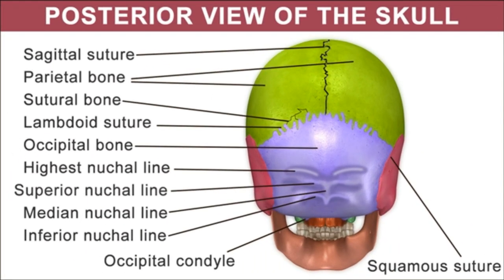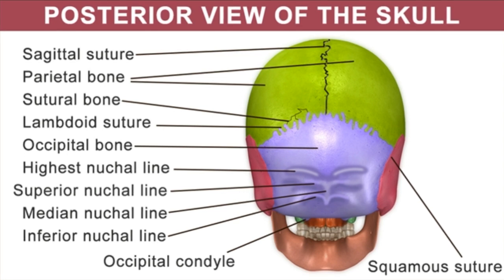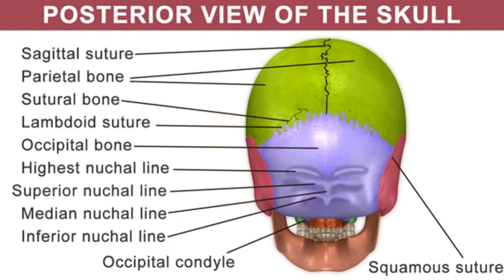Hi everybody, I am Parna again with you all with a new topic. Do you know about the anatomy and functions of the occipital bone explained with the diagram? The occipital bone is the trapezoid-shaped bone that forms the posterior wall and the base of the human skull. Today I will explain the anatomy, diagram, and functions of the occipital bone.